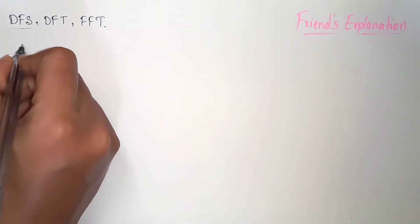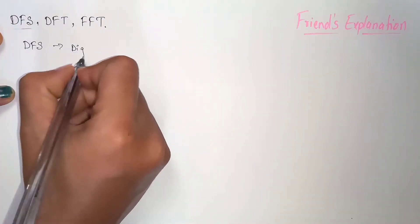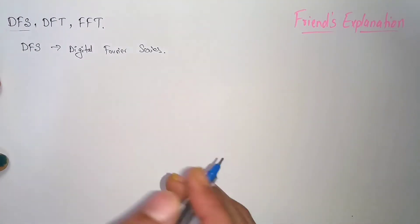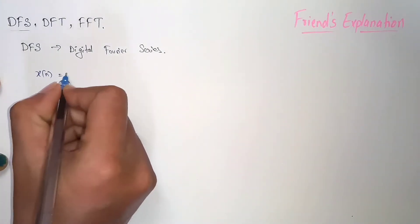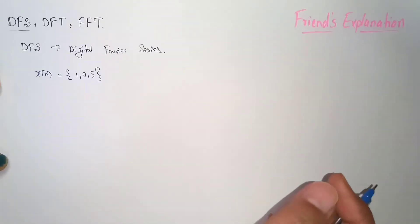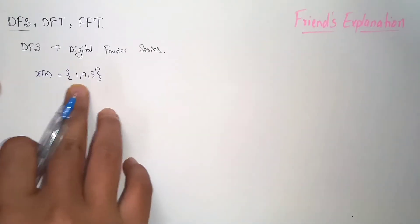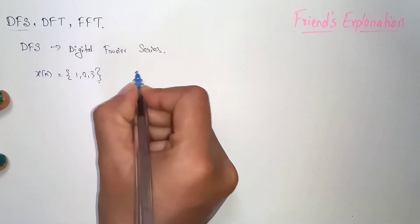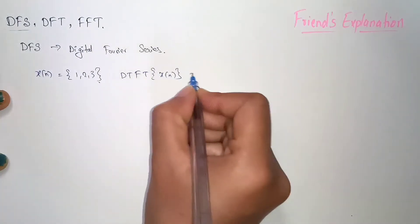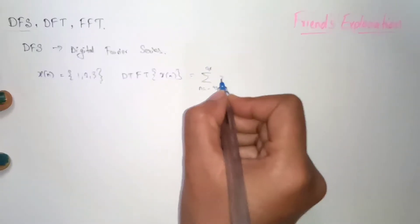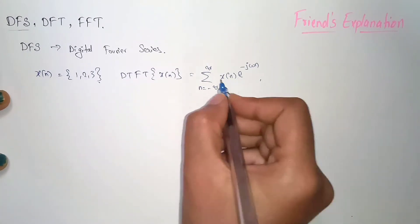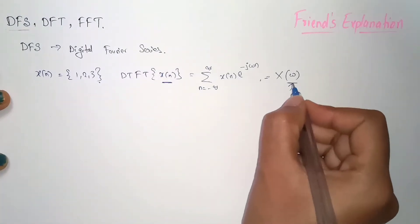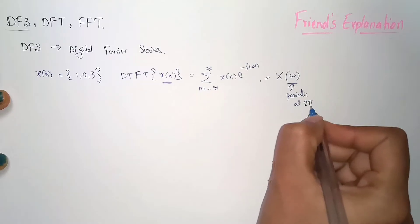First we are going to discuss what is Digital Fourier Series (DFS). Let's start from the beginning. We will consider the non-periodic signal x(n) — let it be 1, 2, and 3. This is a non-periodic signal which is not going to repeat over time; it just has these three samples. Now we are going to perform Discrete Time Fourier Transform on this signal, which can be written as the summation from n equal to minus infinity to infinity of x(n) · e^(−jωn), also represented as X(ω).